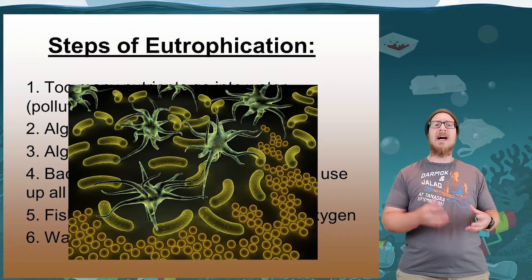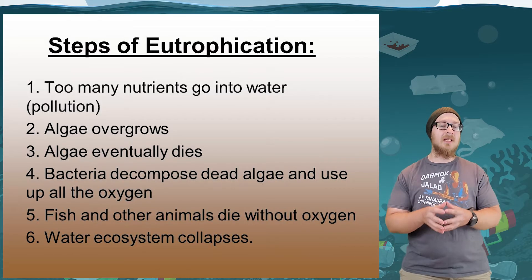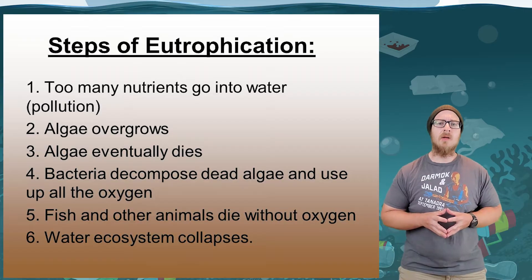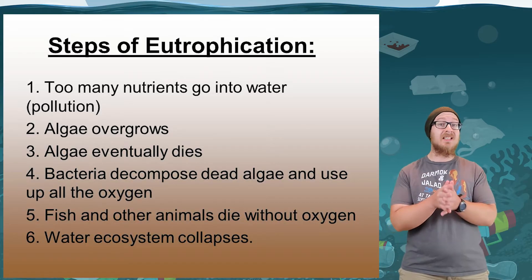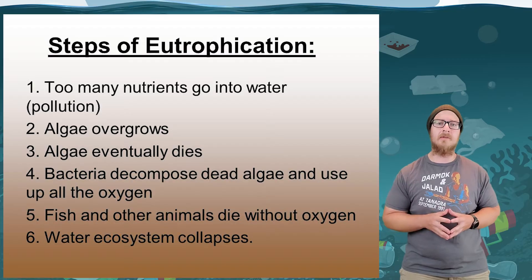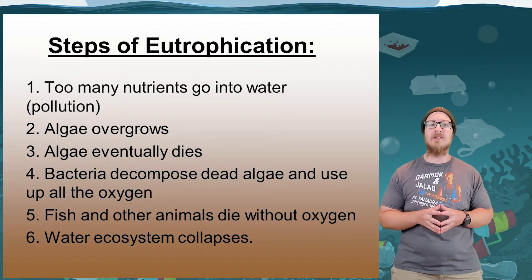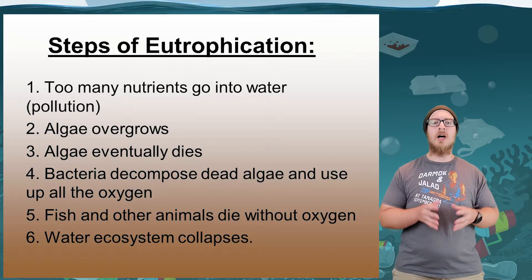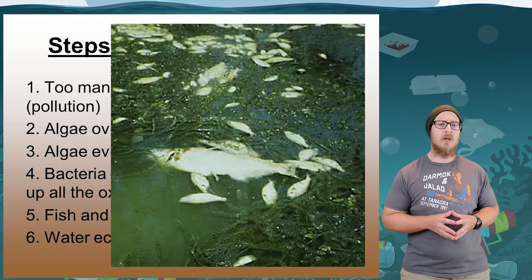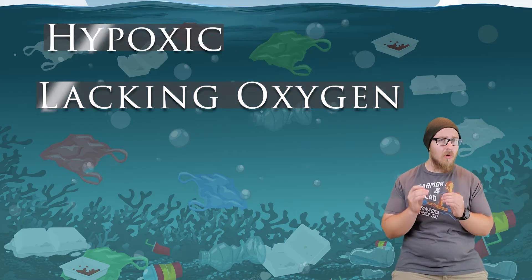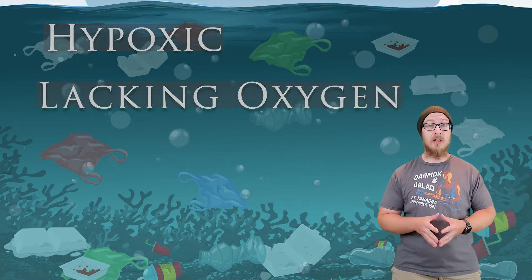Microbes will then digest the dead algae, but these microbes are aerobic, meaning they use oxygen. Because there's so much available material to consume, the microbes deplete the water of dissolved oxygen. This rapid decrease in available oxygen results in large die-offs of fish and other aquatic organisms. A body of water with low oxygen is called hypoxic, meaning it has low available oxygen.